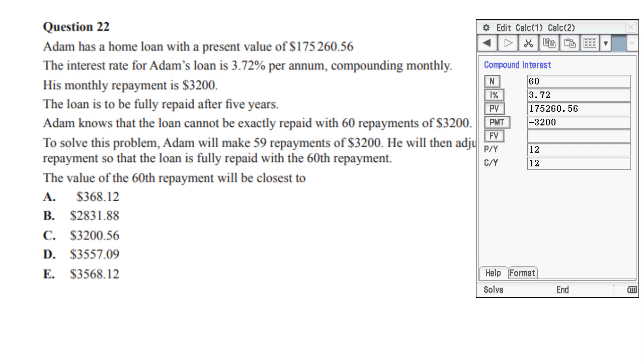Let's look at what's going on here. We've got five years and we know it's monthly, so that's why we get 60. The 3.72 we put straight in there, and the $175,260.56 goes in there. It's positive because it's a home loan, so the bank is giving you money. He's going to make monthly repayments of $3200, which is why we got minus $3200. Payments per year and compoundings per year are 12, so it's compounding monthly and he's making monthly repayments. Type all those values into your calculator.